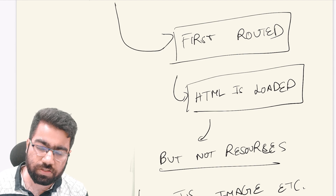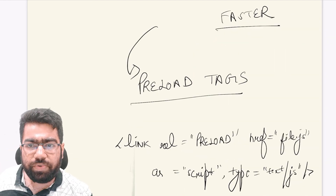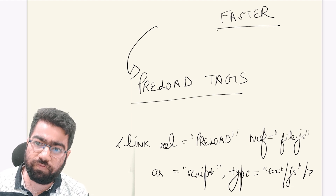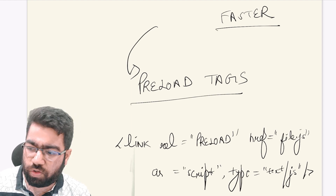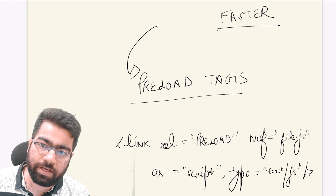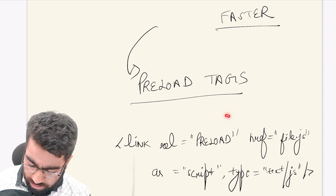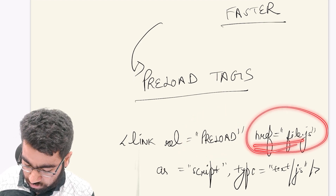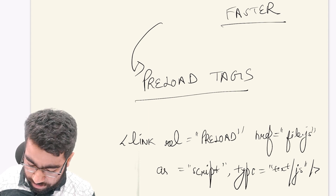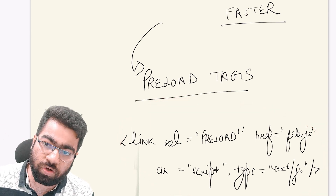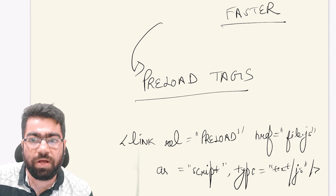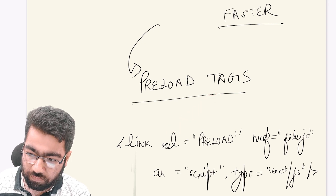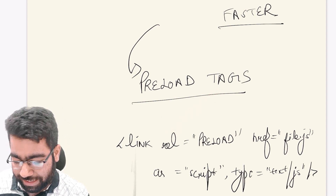What happens is the HTML comes in, the browser starts parsing it, and as soon as it sees different resources it starts fetching those from the server. How can we make this faster? Why not pre-fetch certain things? In JavaScript, there are certain queries which may take a lot of time, and you might want to start those queries before actually rendering the page. To do that, we use something called a preload tag in HTML, where you specify the JavaScript file you want to load and add this tag at the top.